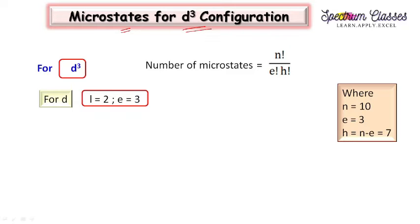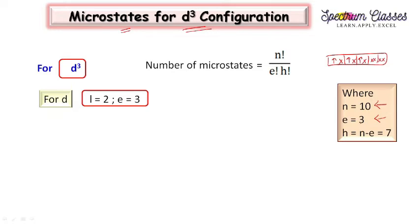I have already given you the formula — n factorial over e factorial h factorial — and what each term means. In the d orbital we have the simplest arrangement of three electrons. The maximum number of electrons a d orbital can accommodate is 10, so n is 10. The holes means the number of additional electrons it can accommodate other than these three, which is 10 minus 3 equals 7 holes.